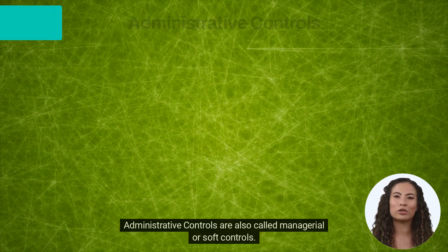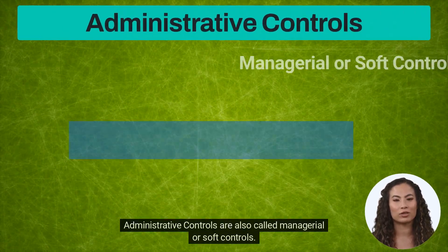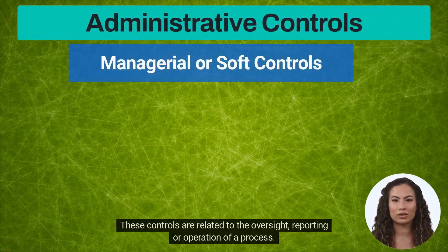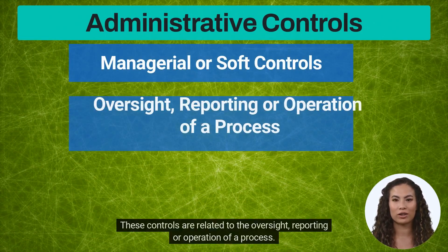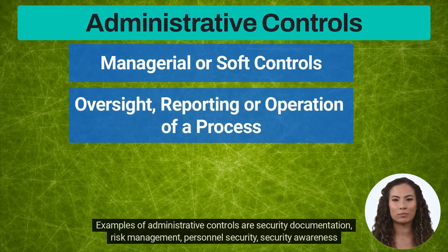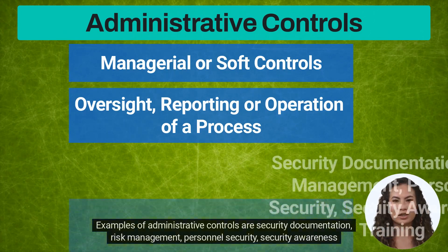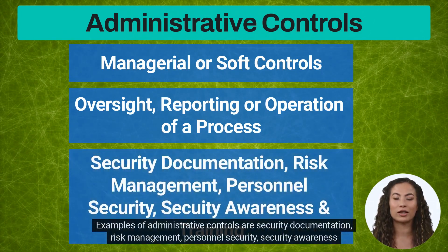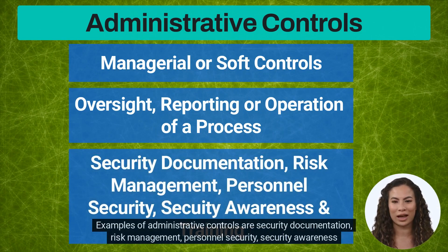Administrative controls are also called managerial or soft controls. These controls are related to the oversight, reporting, or operation of a process. Examples of administrative controls are security documentation, risk management, personnel security, security awareness, and training.